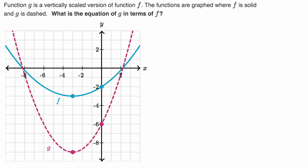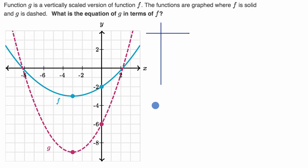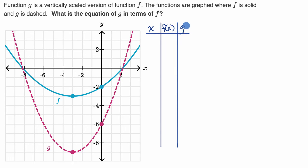Here, function g is a vertically scaled version of f. The functions are graphed where f is solid and g is dashed. What is the equation of g in terms of f? Pause this video and think about it. I'd tackle this with a table showing x, f(x), and g(x). Let's pick some interesting points — when x = -3 is more interesting than zero.